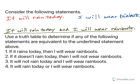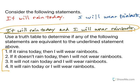We are going to look at the compound statement: it will rain today and I will wear rain boots. Use a truth table to determine if any of the following statements are equivalent to that underlined statement. We have four: one, if it rains today then I will wear rain boots; two, if it doesn't rain today then I will not wear rain boots; three, it will not rain today and I will wear rain boots; and four, it will rain today or I will wear rain boots.